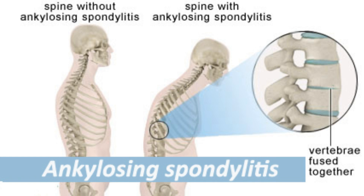Now let's talk about ankylosing spondylitis. Notice I say spondylitis — that is the correct word that goes with ankylosing. We're looking primarily at an arthritide, more of an autoimmune and potentially hereditary condition. There is an antigen known as HLA-B27 that we can find in the blood, and it's believed to be an autoimmune or autoinflammatory type of condition that can be seen on blood work.